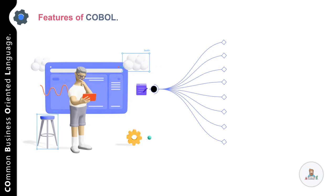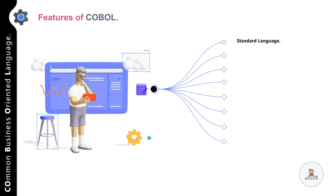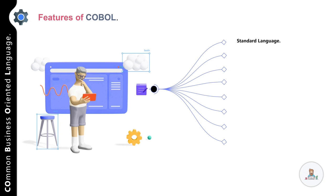COBOL is predominantly used for business-oriented applications, and being an old programming language, it is still holding its ground due to its features. The first important feature is that COBOL is a standard language — COBOL compilers are made available by different third-party vendors on almost all types of computers or computing platforms, and all these compiler manufacturers adhere to the norms set by ANSI.